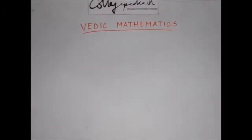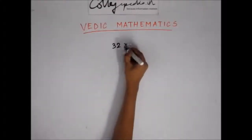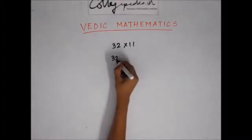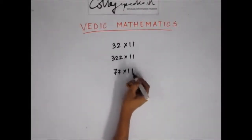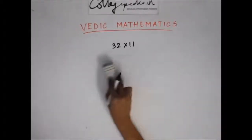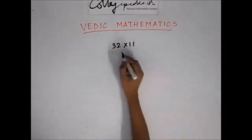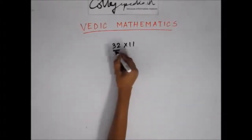Hello everyone. In this lecture we'll learn how to multiply a number with 11 using a very simple method. For example: 32 multiplied by 11, 322 multiplied by 11, 77 multiplied by 11. Let's understand the trick.